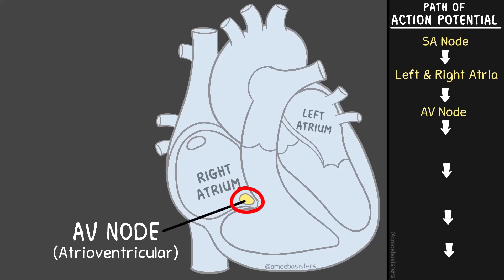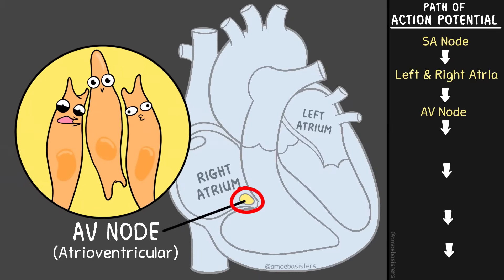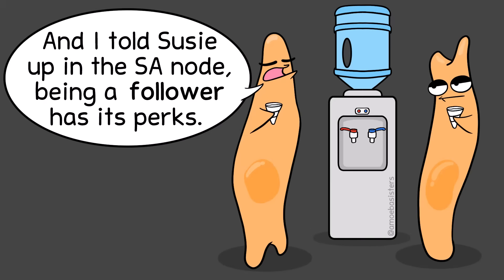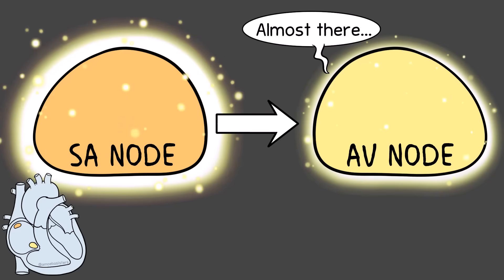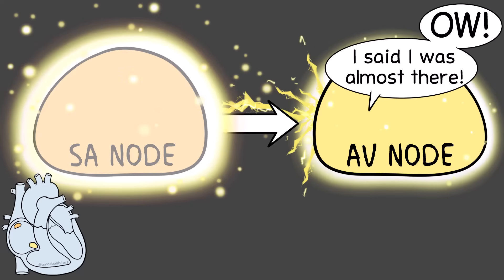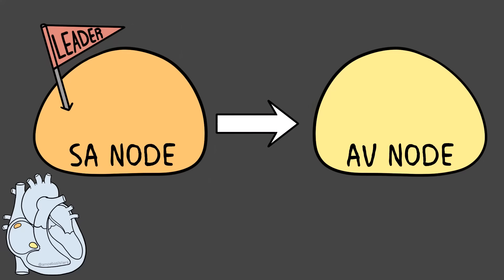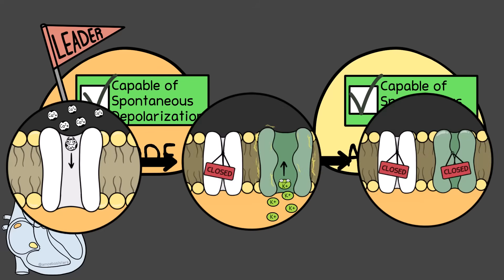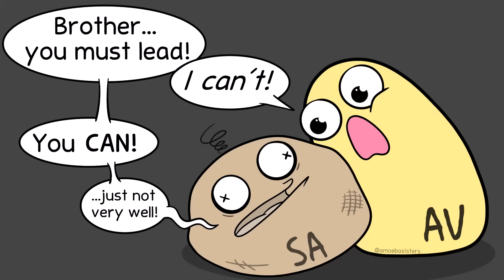Here is the AV node, which is also in the right atrium. Location-wise, it's inferior to the SA node. The AV node also has cells involved in conductivity, including pacemaker cells, though many of the conductivity cells in the AV node are a bit different from those in the SA node. In a healthy human heart, the AV node propagates the action potential it receives from the SA node — the SA node is the leader here. However, cells in the AV node can do spontaneous depolarization, meaning the AV node can be a backup if the SA node were to fail, though at a slower rate.